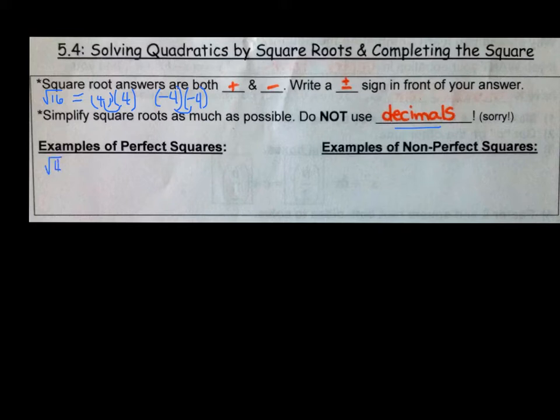So examples of perfect squares would be 4. If you square root that, you get a perfect number, 16, 36, 25, you can think of some of your own, 144, 121. Those are all examples where you do not get decimals. They're very nice to simplify. Non-perfect squares would be like the square root of 3 or the square root of 10 or the square root of 15 or the square root of 20.